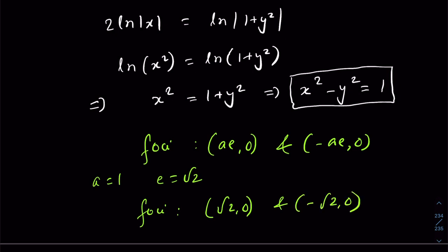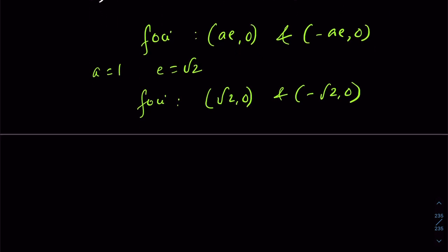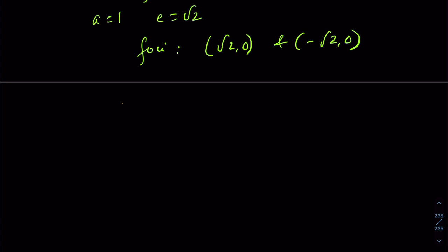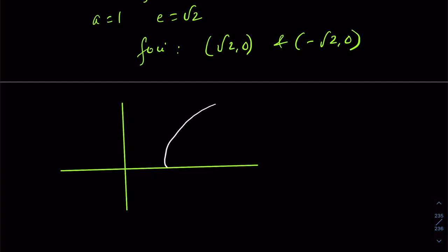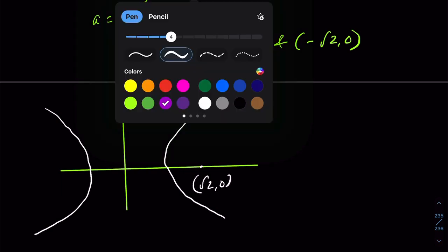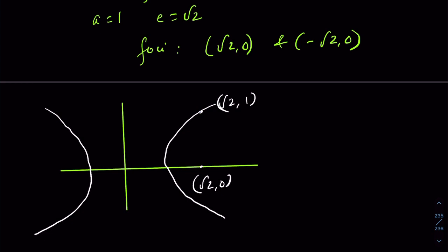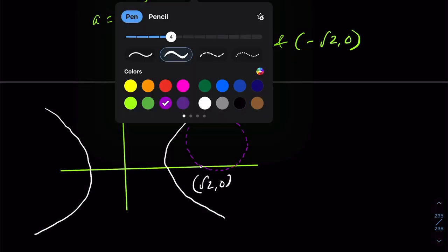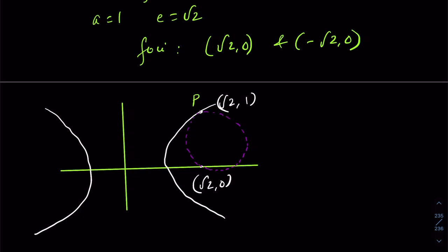Let's move forward to find the equation of the circle. I'll sketch a small diagram. We need a circle which passes through the two foci and touches the hyperbola at (√2, 1) — let's call that point P.